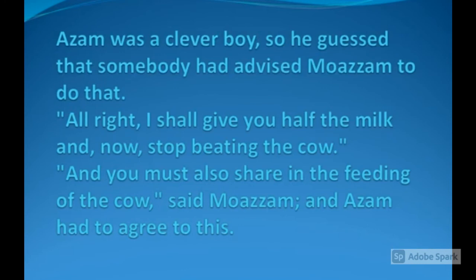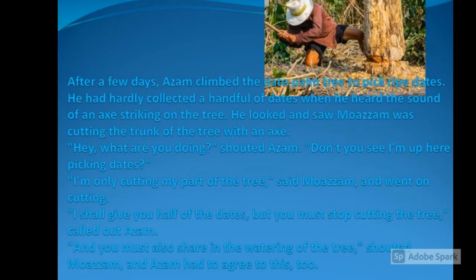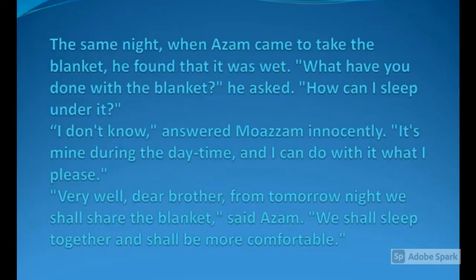After a few days, Assam climbed the dead palm tree to pick dates. He had hardly collected a handful when he heard the sound of an axe striking the tree. Moazam was cutting the lower trunk, claiming it belonged to him. Assam agreed to give half the dates and also agreed to help in watering the tree.